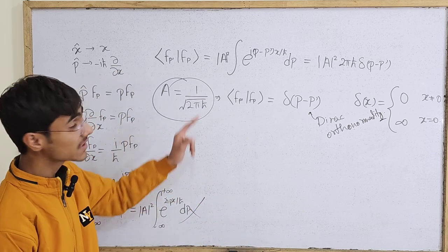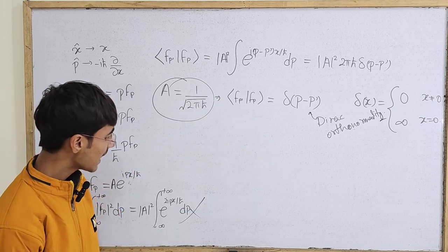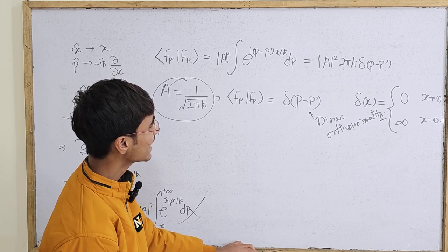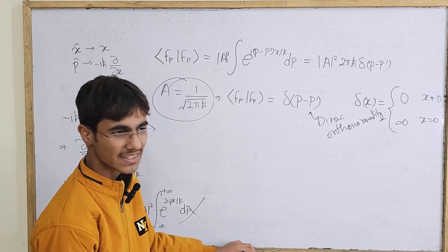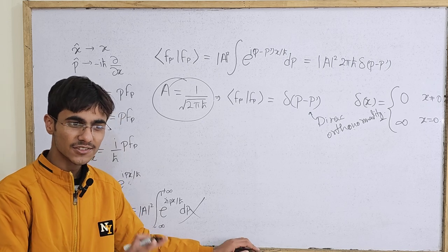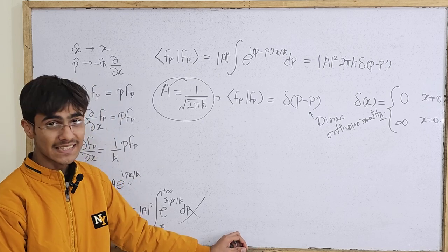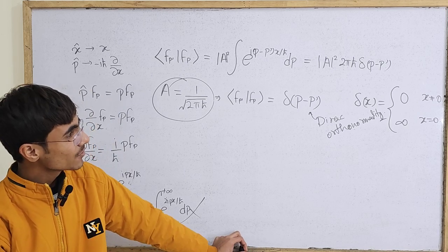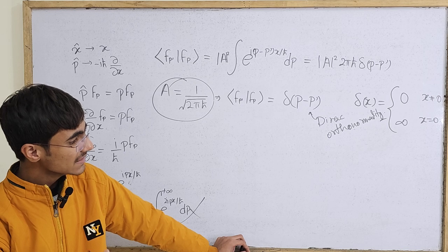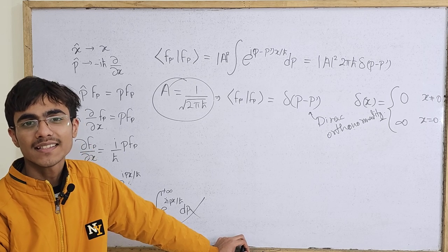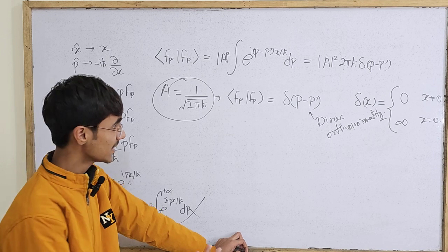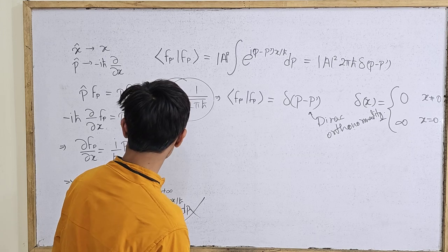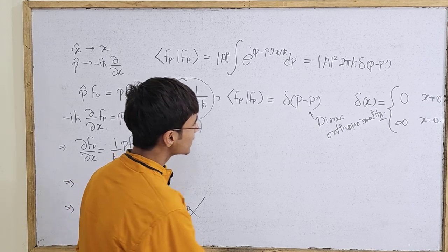One more thing to remember: this Dirac orthonormality holds true only for real eigenvalues. For non-normalizable eigenfunctions, we take real eigenvalues as an axiom. For normalizable eigenfunctions, by contrast, the reality of eigenvalues can actually be proven as a theorem.